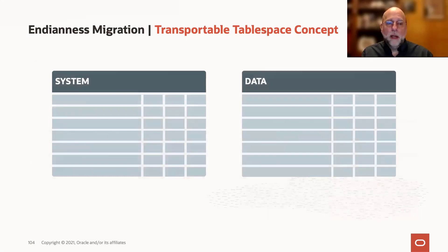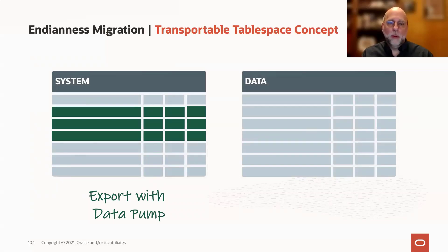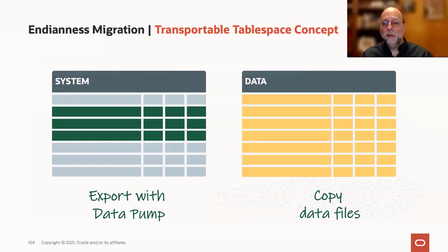When we have a system tablespace, that system tablespace has to be exported with DataPump. That's because the system tablespace has a bunch of things in it that already exist in any new database — not just your metadata about the application objects, but metadata about system objects that shouldn't move into a new database. Your data files, however, we can copy the entire data file as a unit. If we're staying on the same endianness, we can just copy it from one system to another. If we're going cross-endian, we can use RMAN convert to convert the data files.